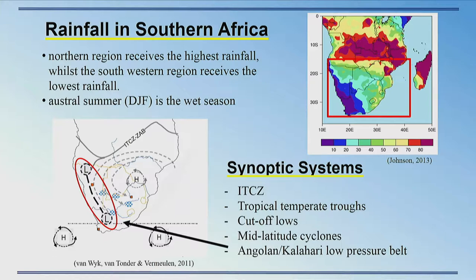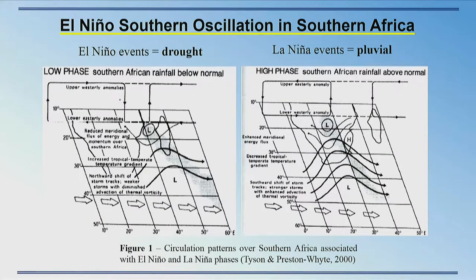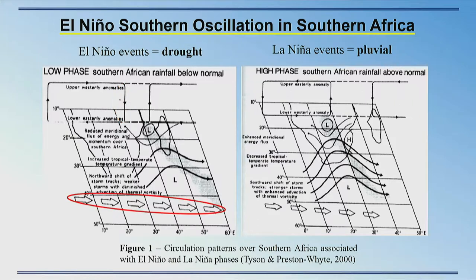Regarding the influence of El Niño–Southern Oscillation: typically an El Niño event results in drought conditions. This is due to the shifting of the tropical temperate trough east of the continent and a descending limb falling over the continent, creating a high pressure. There is also a northward shift of the mid-latitude cyclone track, but the storms are generally weaker — all of which leads to generally drier conditions.